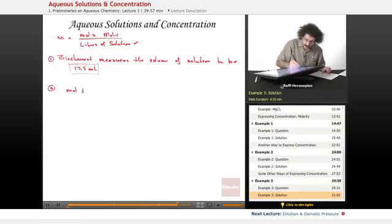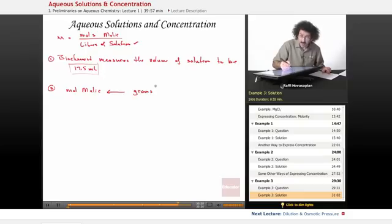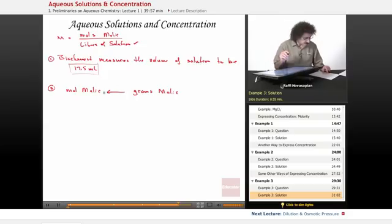Now we just need to find the moles of malic acid. I need the moles of malic acid and I know that I can get the moles from the grams of malic acid. My conversion factor is the molar mass. Molar mass is easy, I just look it up.